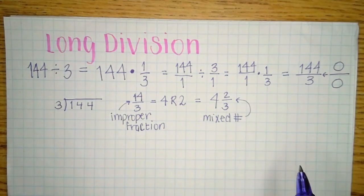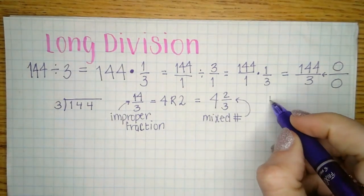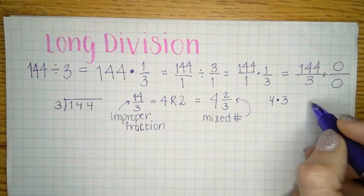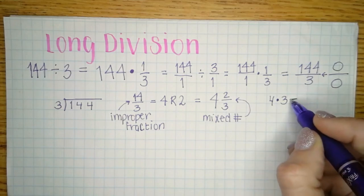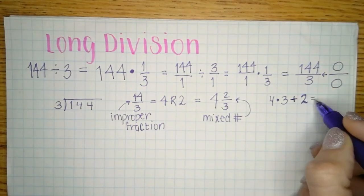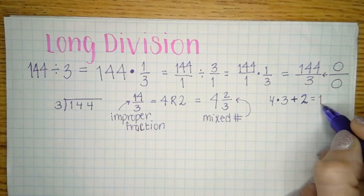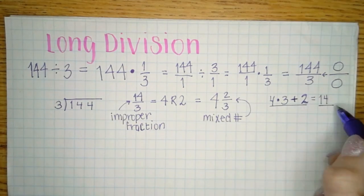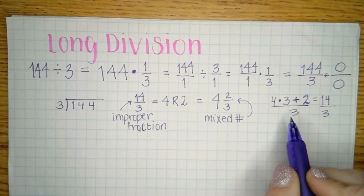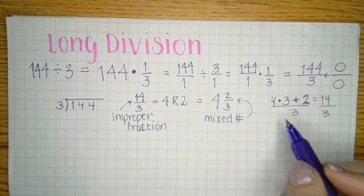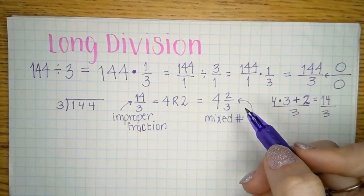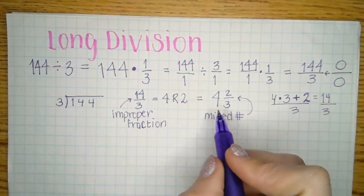Your teacher showed you how to go from a mixed number back to an improper fraction. You do 4 times 3, then add the 2 — the top number. Four times 3 is 12 plus 2 is 14, and then you put that over the bottom number, which is 3. Everything I'm talking about matters when we do polynomials because there's going to be a connection with everything.